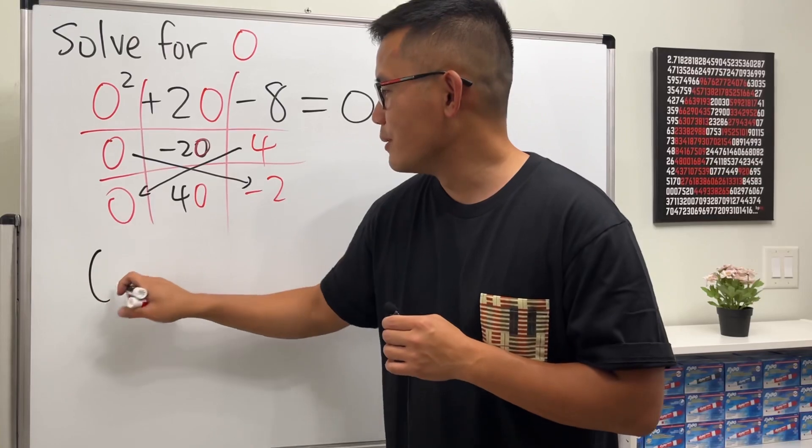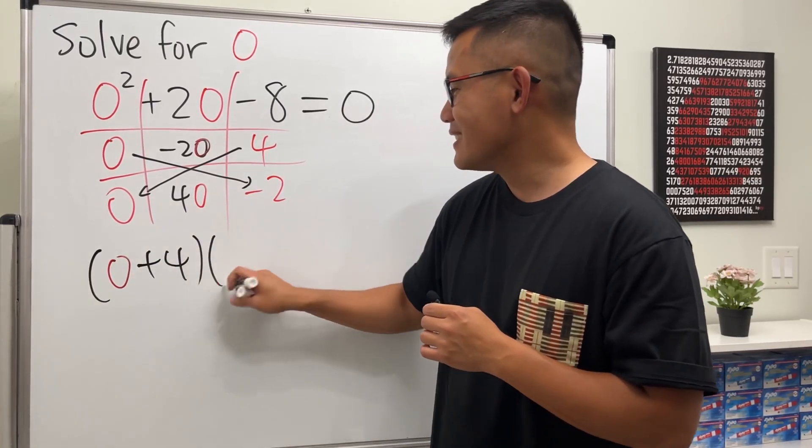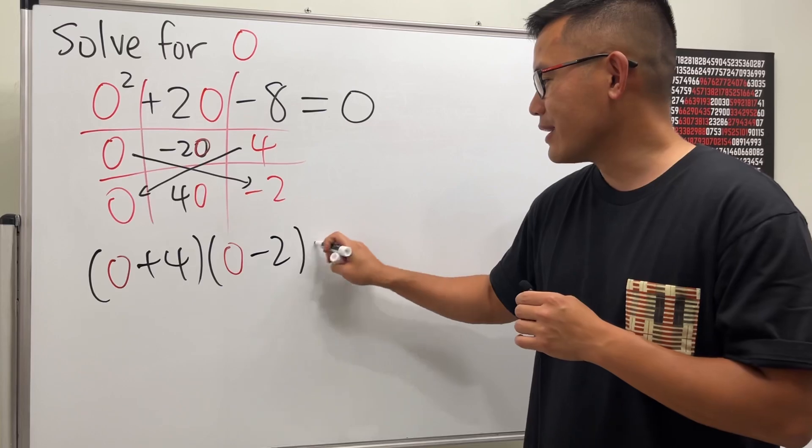So the factoring right here is going to be O plus 4 and then times O minus 2. And this right here is equal to 0.